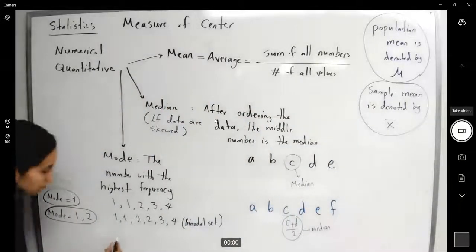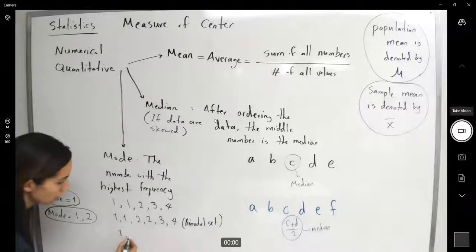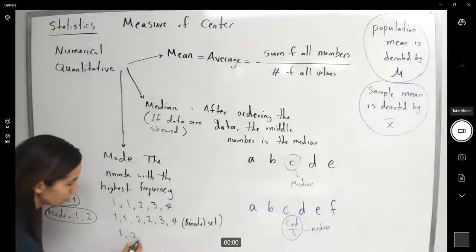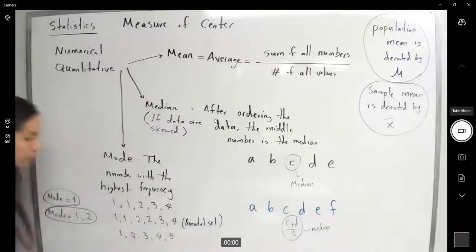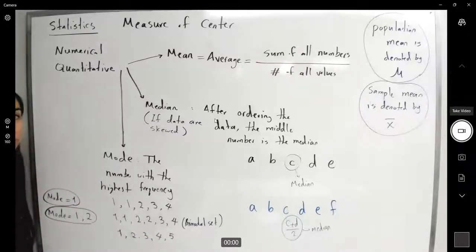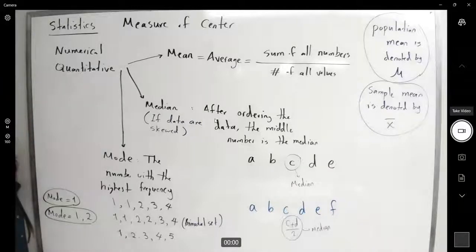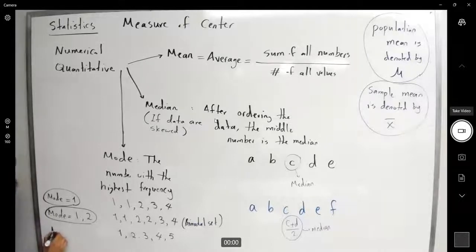What about 1, 2, 3, 4, and 5? Which number is repeated the most? None. So you say no mode.